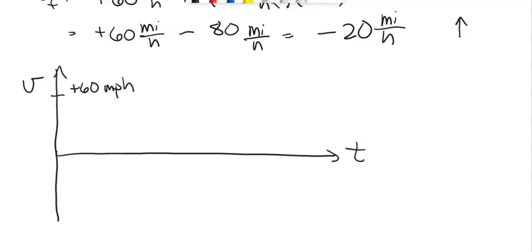And we started at positive 60 miles per hour, and each hour we lost 10 until at 8 hours our speed is negative 20 miles per hour.